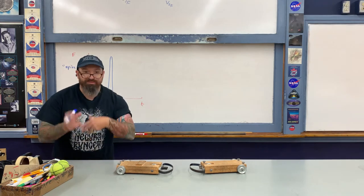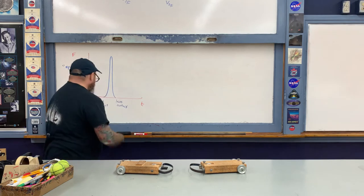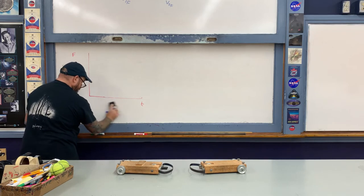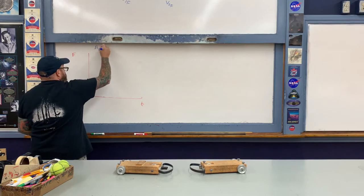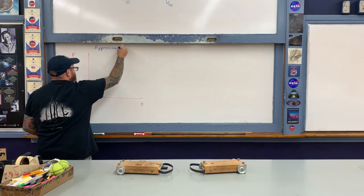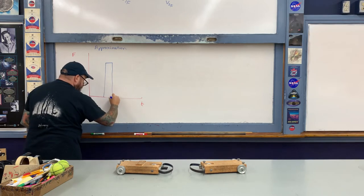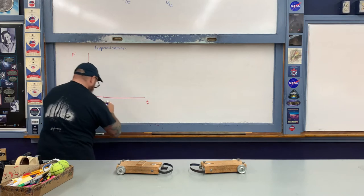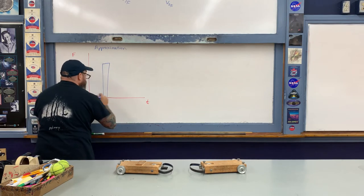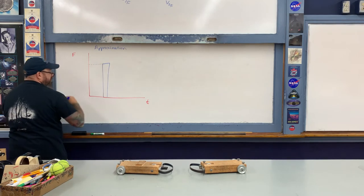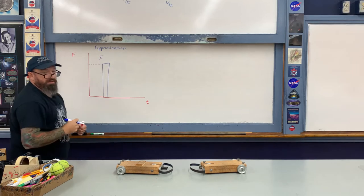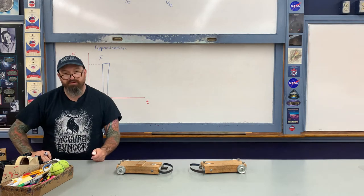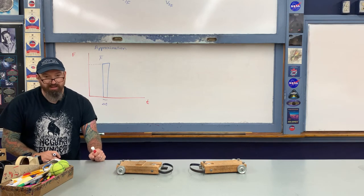What we're going to do is approximate this spike as a rectangle. This allows us to get around some calculus, which we skip in this class. As an approximation, we take that spike and approximate it as a rectangle. The height of the rectangle is the average force that one cart exerts upon another. The width of the rectangle is the time interval, referred to as delta-t — usually a few hundredths or thousandths of a second, measured using high-speed photography.